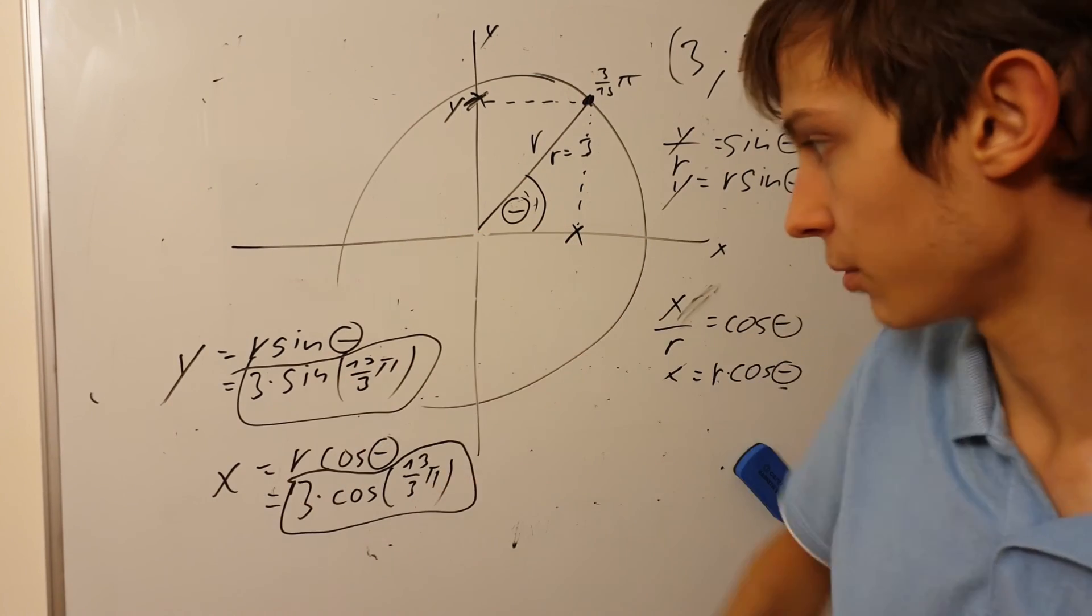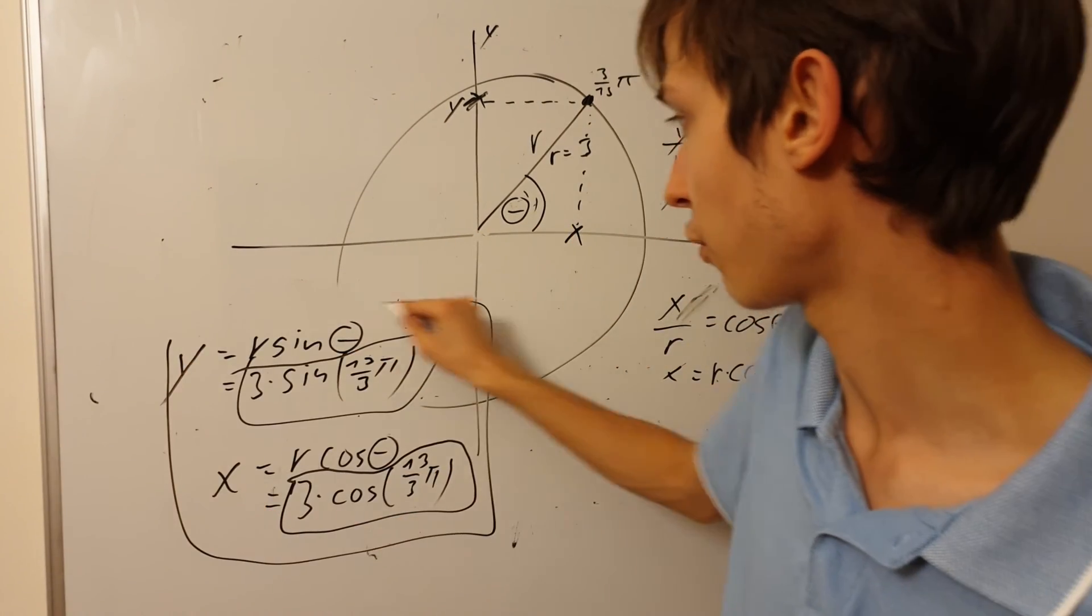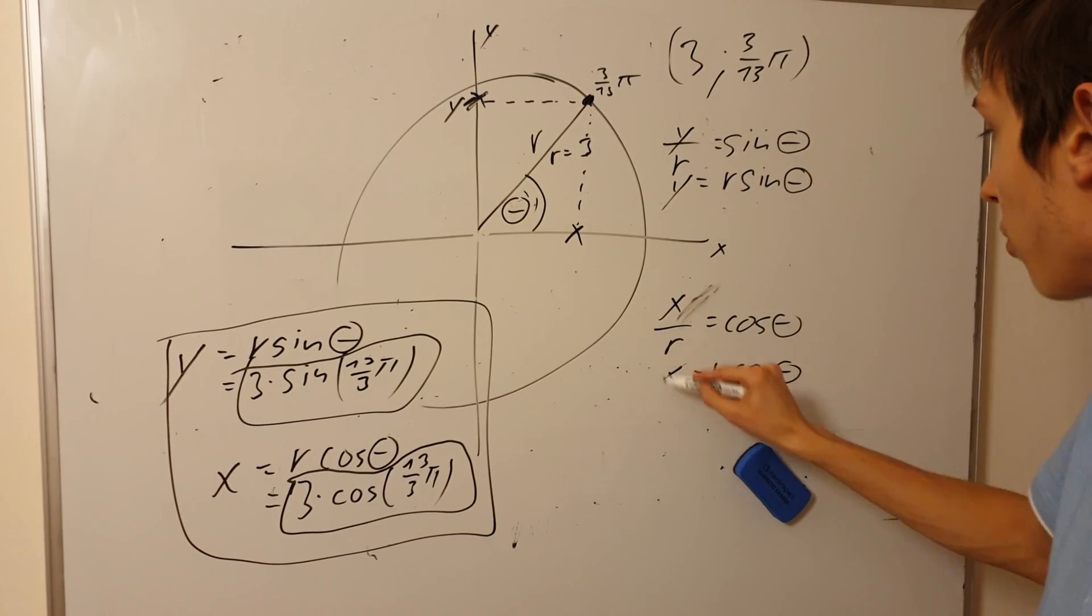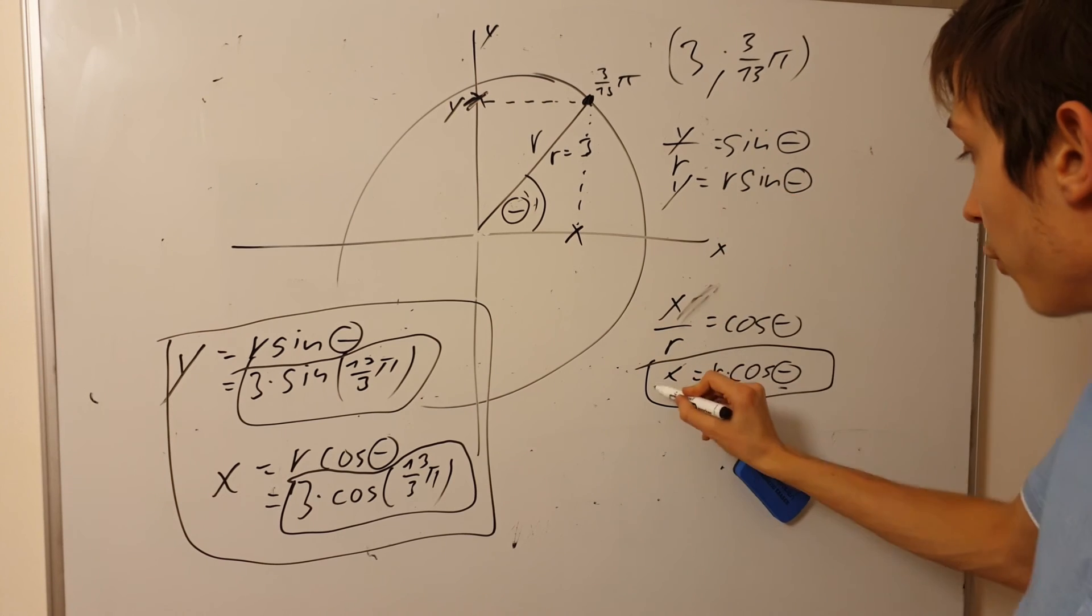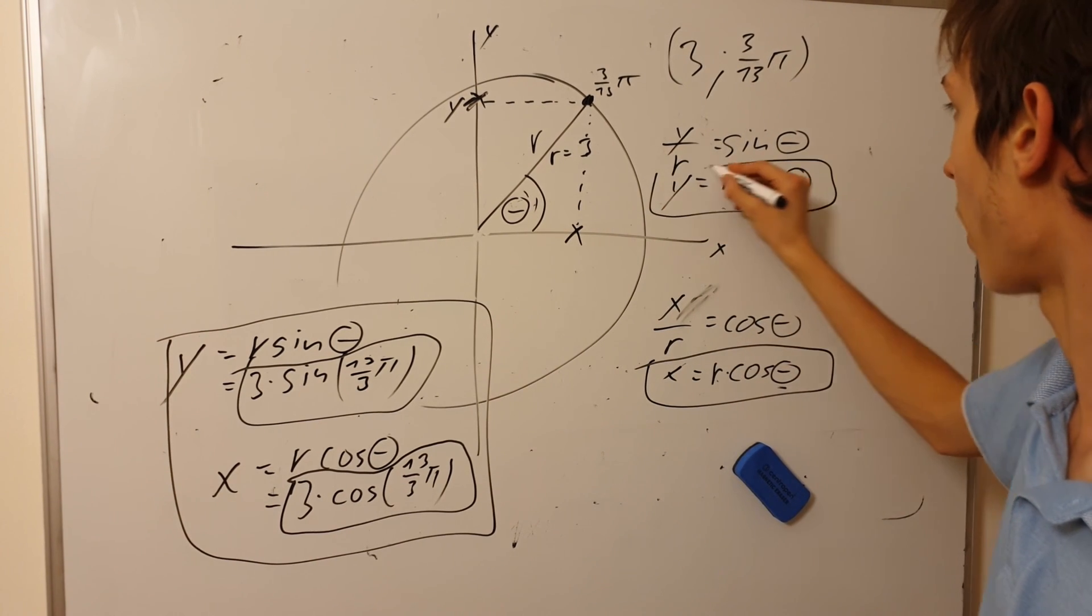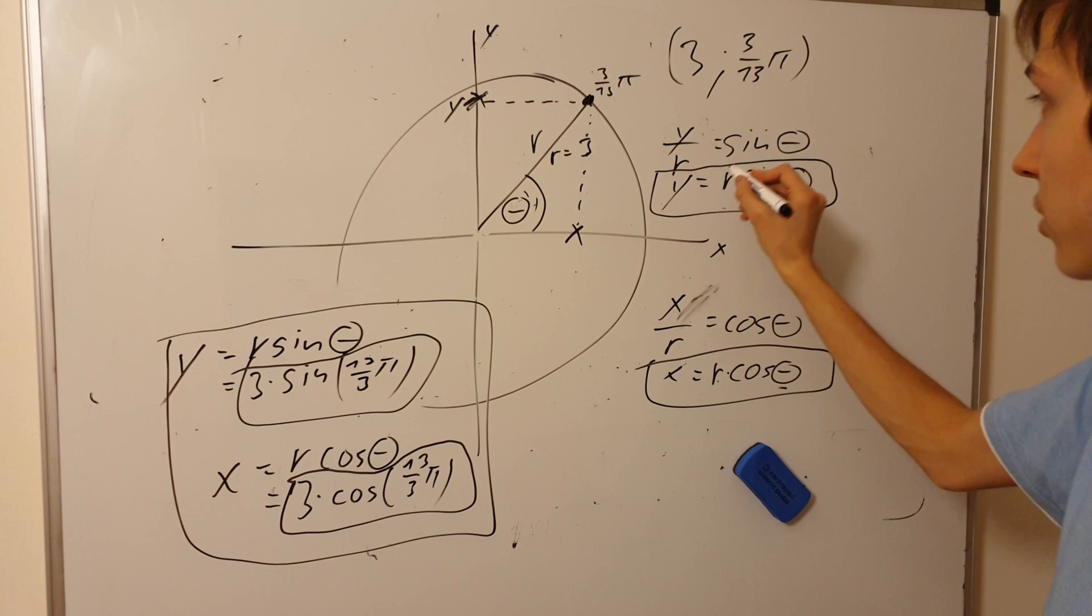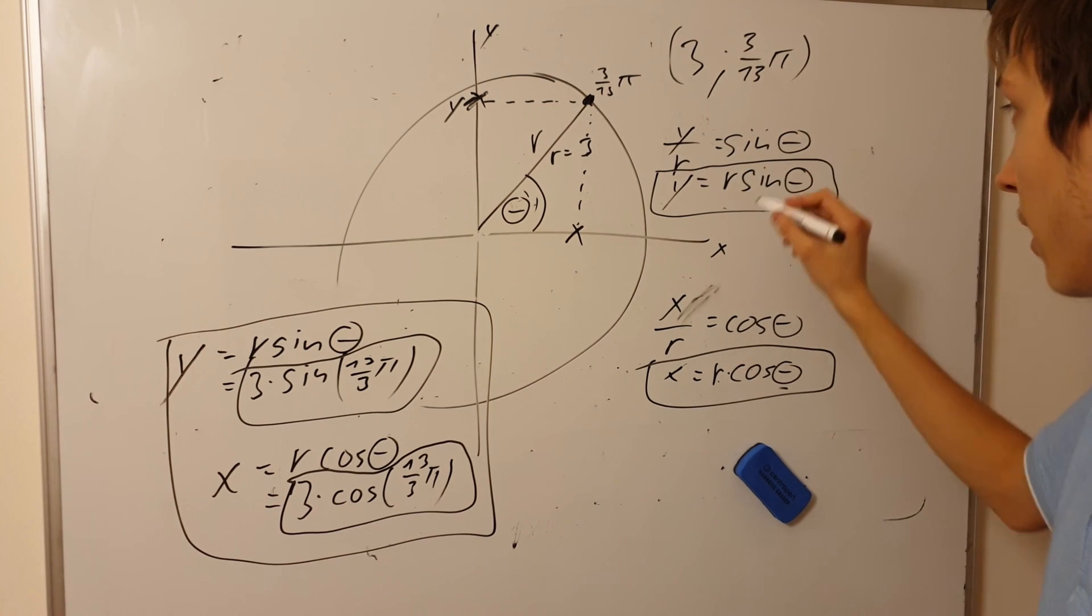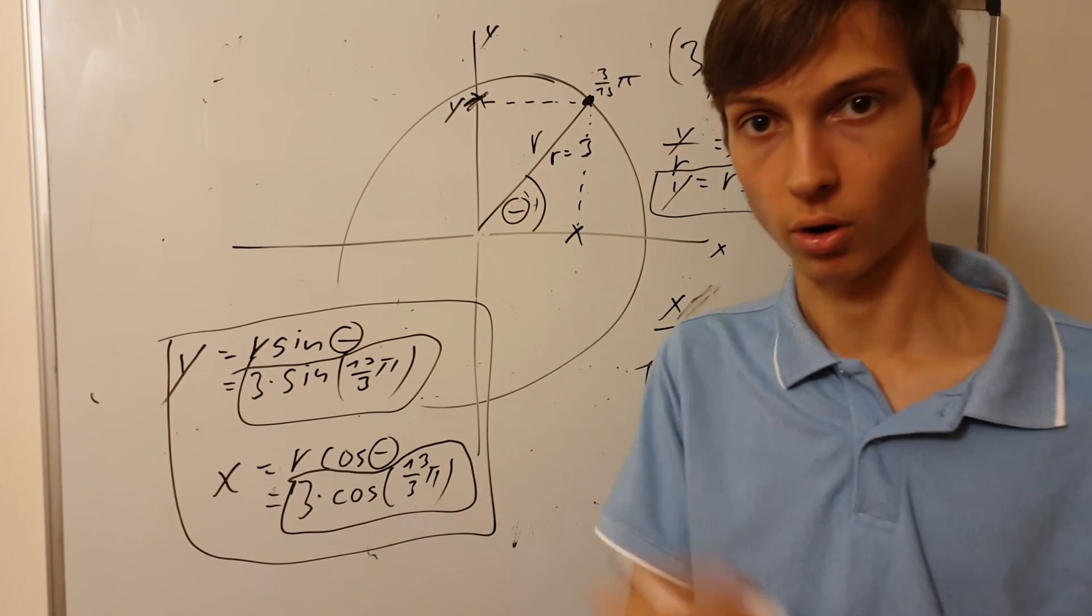But that's a realization for a different time maybe. But just think about it. How this works. These two pieces of information. So this is the formula. This is formula for x. How to convert to x using your radius and using your angle and the polar coordinates. And this is the formula for y. How to convert to y using the radius and the angle from the polar coordinates.